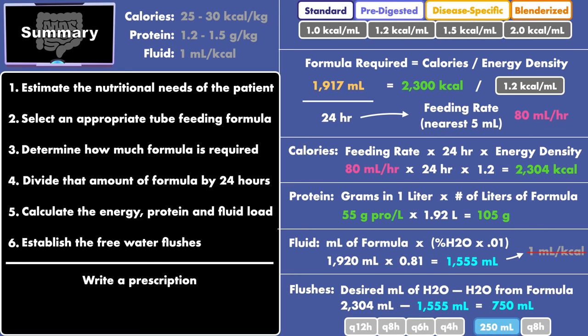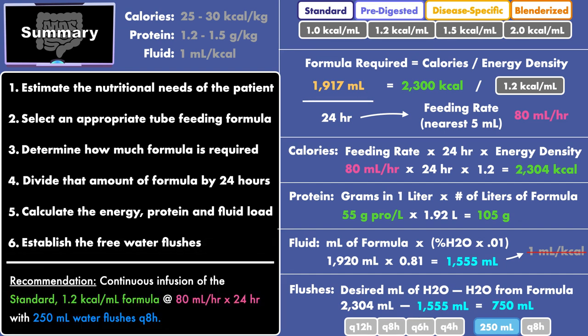After all calculations and decisions have been made, you write the prescription. We recommend a continuous infusion of the standard 1.2-calorie formula at 80 milliliters per hour times 24 hours per day with 250 milliliter water flushes every 8 hours. This provides a maximum of 2,304 calories, 105 grams of protein, and 2,305 milliliters of water per day.